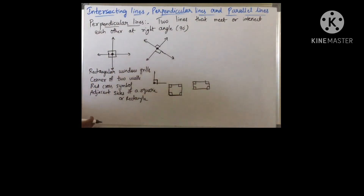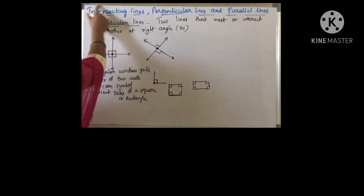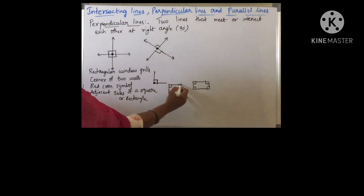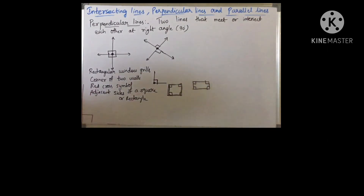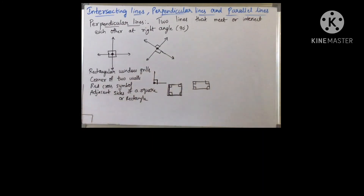Suppose if you take this board — here this line and this line are intersecting, and here is a corner where 90 degrees is formed. We get four pairs of perpendicular lines from the adjacent sides of a square or rectangle.